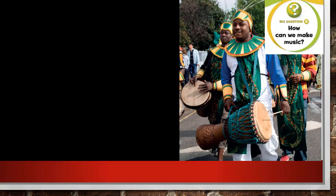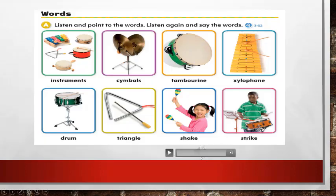So, how can we make music? By using different types of musical instruments. Now listen carefully to the words — page 148, Unit 15. Get ready: words. Listen and point to the words, then listen again and say the words: instruments.